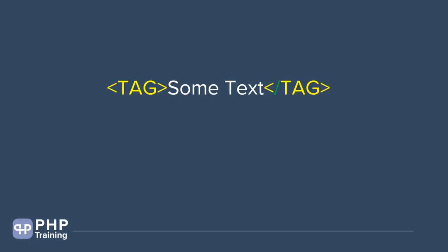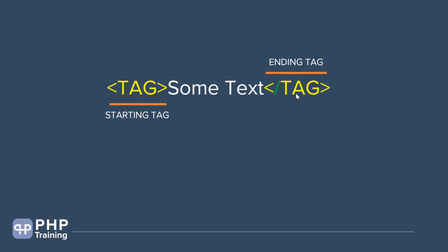Tags look something like this. You have a less-than symbol, then you have the name of the tag, then you have a greater-than symbol, then you have a closing tag which is less-than forward-slash and the same name used for the opening. You have some content inside it. The starting tag is called the starting tag or opening tag, and the ending tag — the one that ends with a forward slash — is called the ending tag or closing tag.